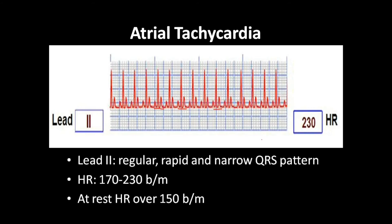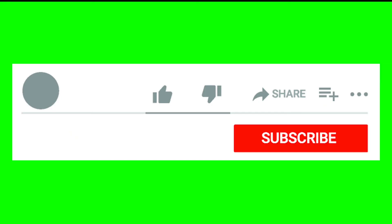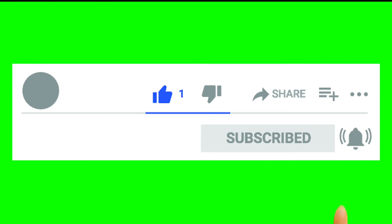At rest, the heart rate will be over 150 beats per minute. In sinus tachycardia it may go up to 150, but in atrial tachycardia the heart rate will be more than 150 beats per minute even at rest. Thanks for watching — please like and subscribe to my channel.